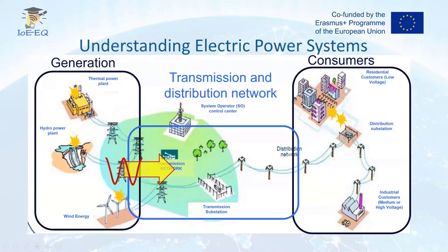The energy flows from the left to the right — from generation to consumers — and the data comes in the opposite direction, from the consumers to the utility.